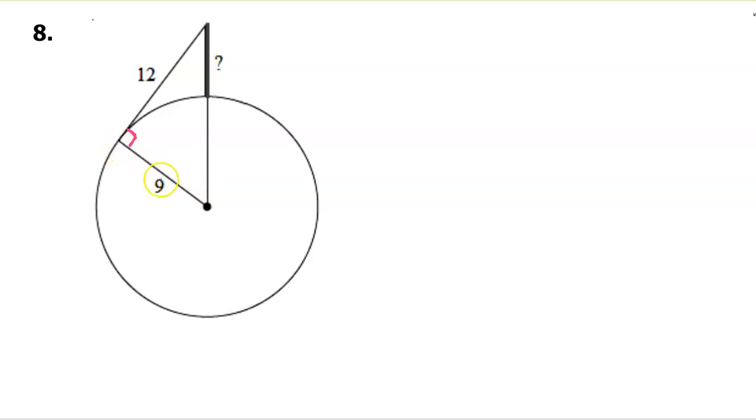Speaking of the radius, notice that we have two radii here. So even though it's not marked, we know the length of this line. Every radius in a circle is going to be the same. So if this black radius over here is 9, then this red radius right here is also 9. That's some key information that we're going to need.